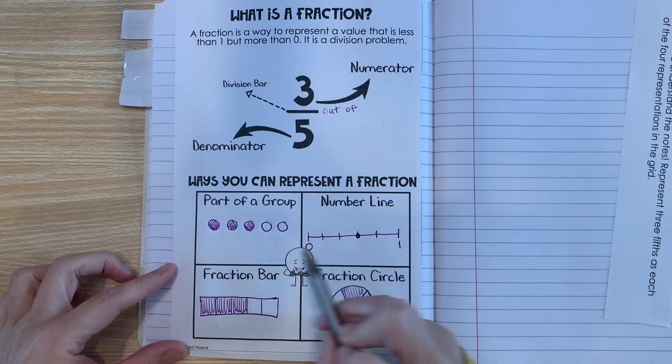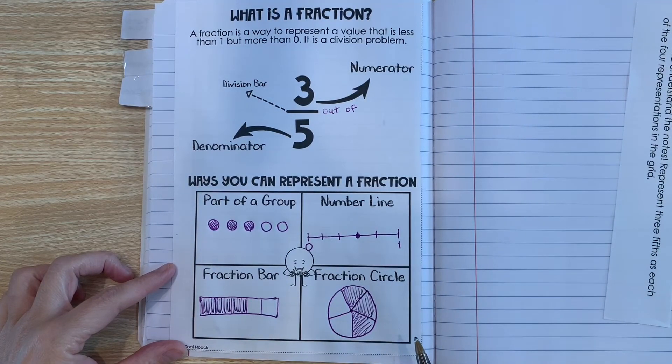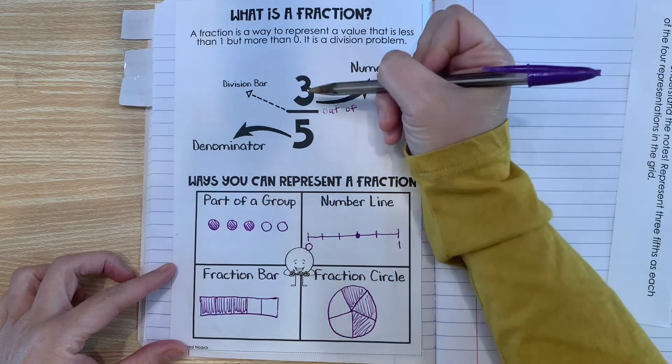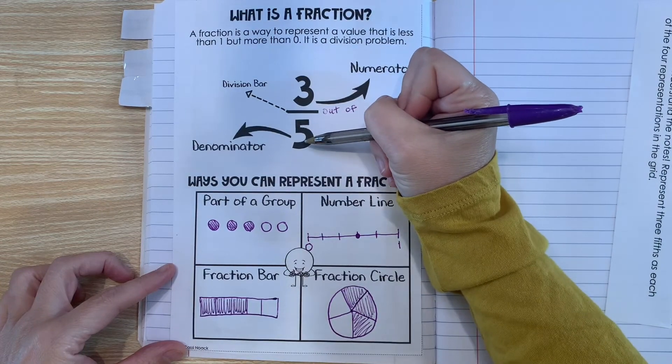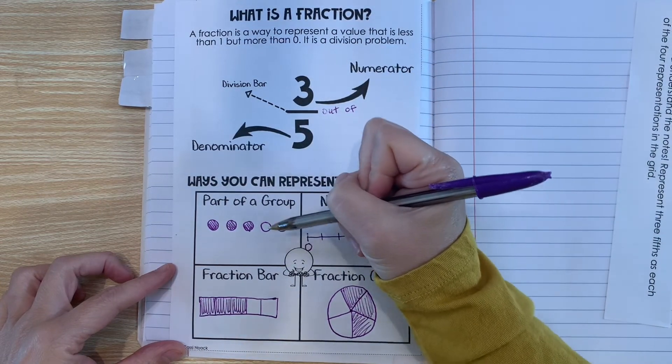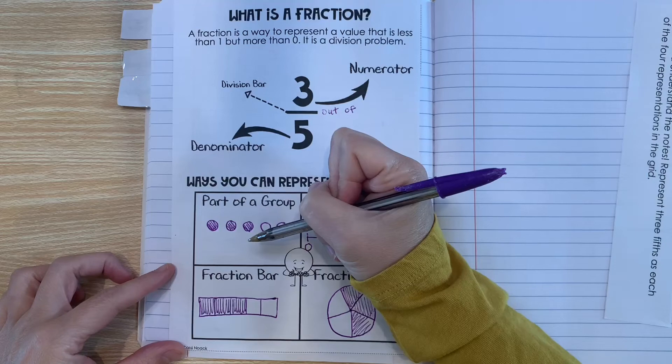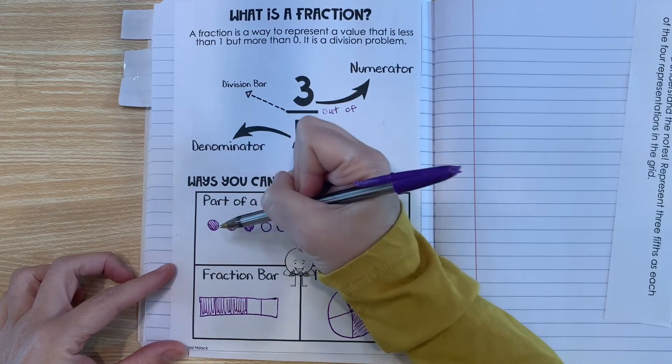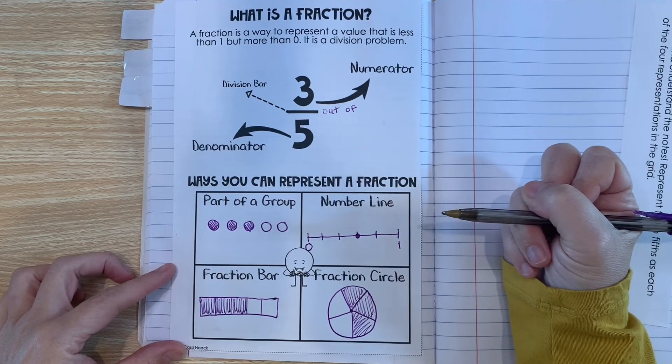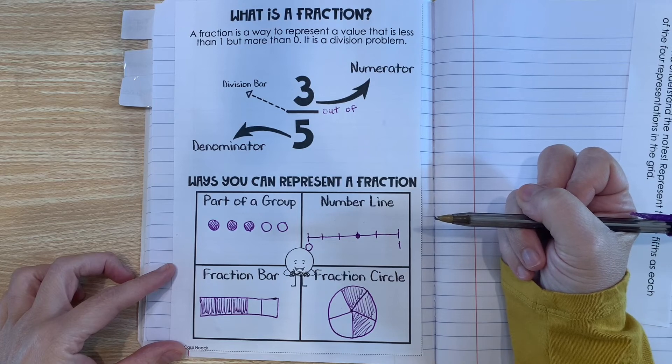So even though each of these models look a little bit different, they all represent three fifths. And that's because they all have five equal parts and three of those parts are shaded. All right, next time we're going to learn a little bit more about fractions.